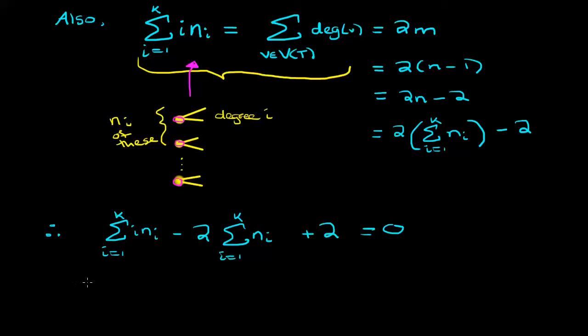If we simplify this a little bit, what we get is the sum of (i minus 2) times n_i, where i goes from 1 up to k, and don't forget the plus 2. All of this equals 0.